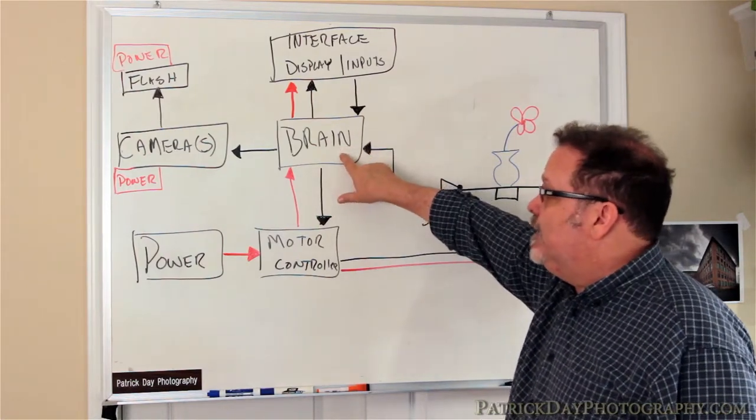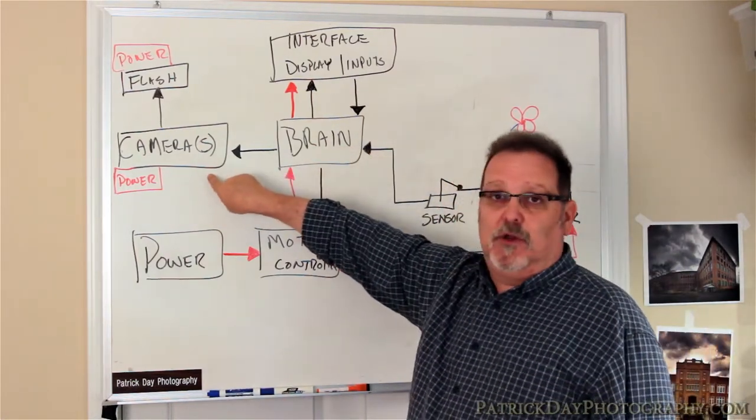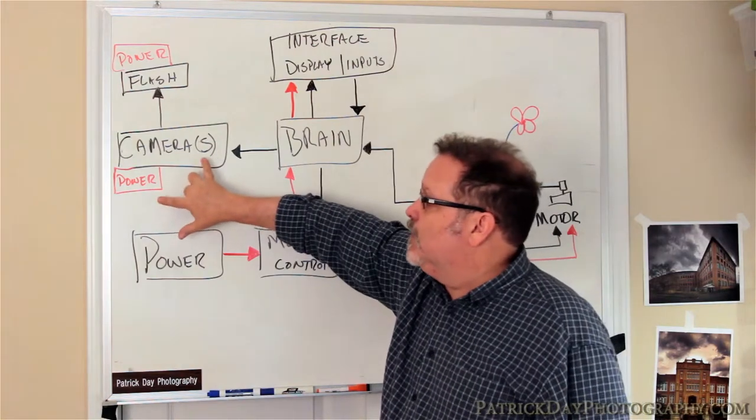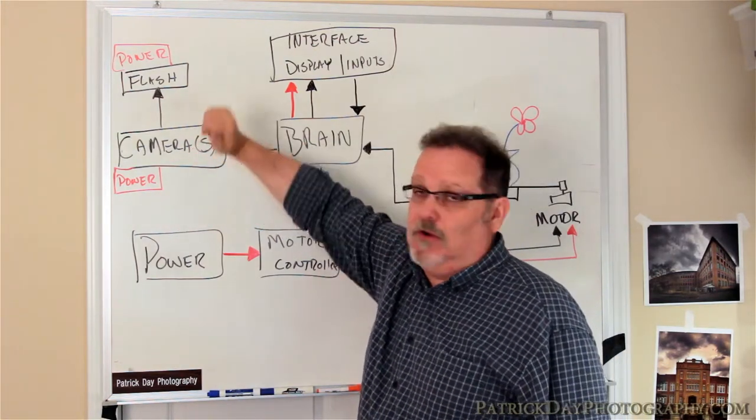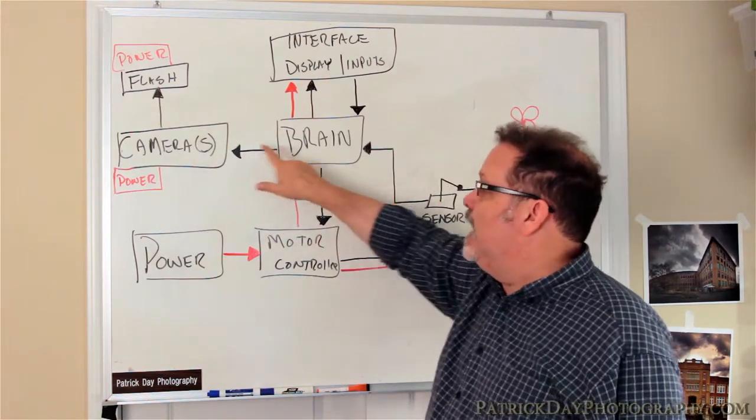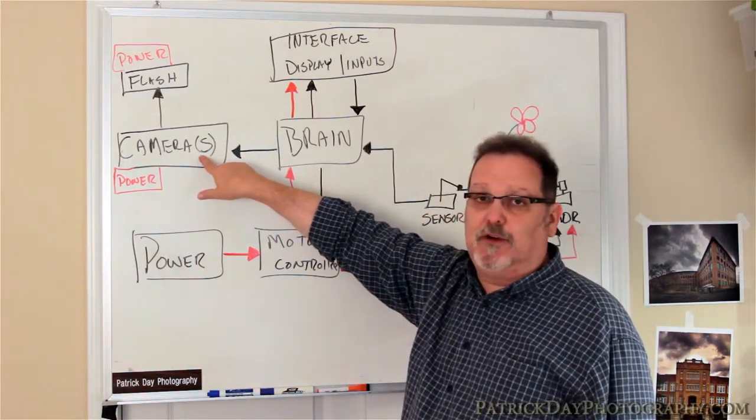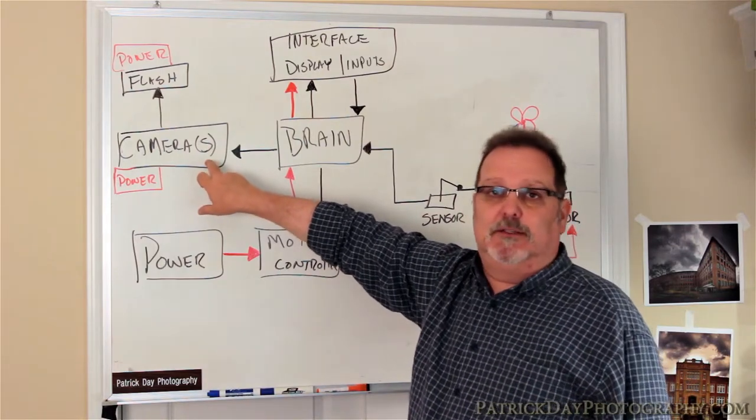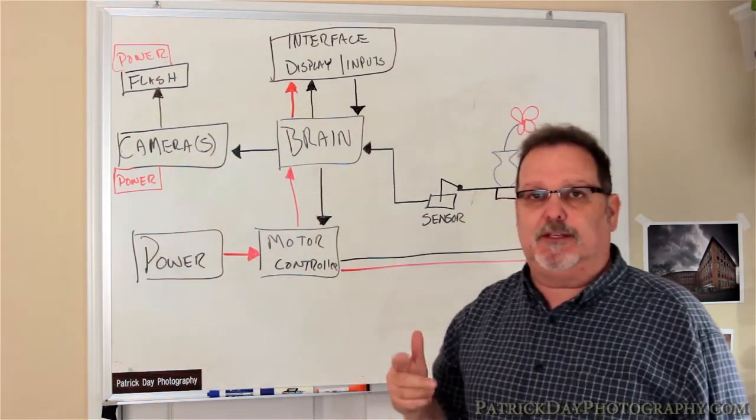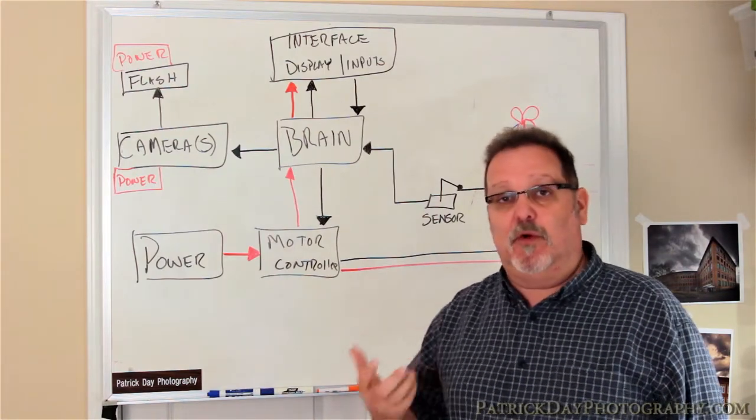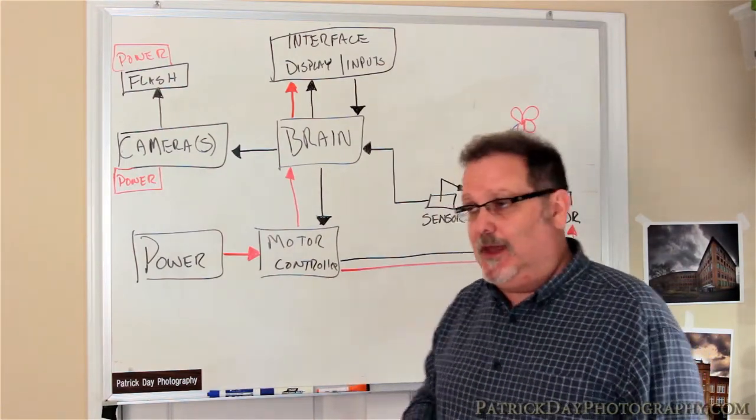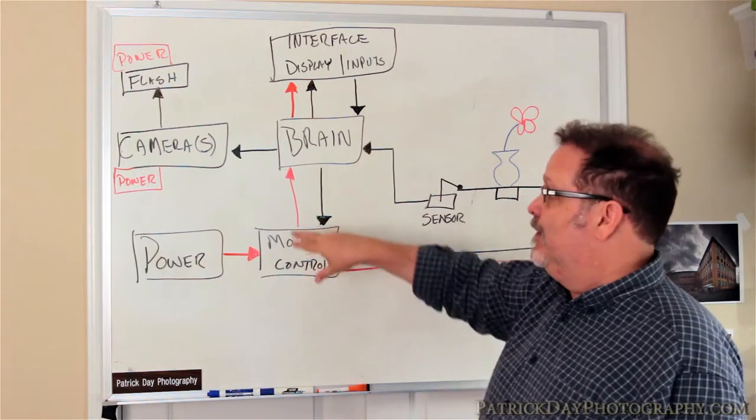With the brain, the brain is going to control the camera. Now, like I said, I'm going to assume that the camera has its own power and the cameras are controlling the flash. The brain is what sends the trigger to the camera. Now, notice I have the cameras, this is in parentheses. So, hopefully, I'll be able to incorporate more than one camera. There, again, that's a teaser for another, later, podcast.